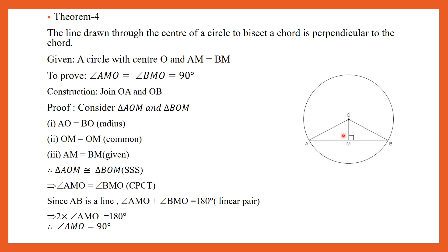Consider triangles AOM and BOM. We have AO is equal to BO, the radius of the circle. OM is equal to OM, common side. It is already given that AM is equal to BM. Therefore, triangle AOM is congruent to triangle BOM using SSS criteria. Therefore, angle AMO is equal to angle BMO using CPCT. Since AB is a straight line, angle AMO plus angle BMO equals 180 degrees using linear pair. Since both angles are equal, 2 times angle AMO equals 180 degrees, which implies angle AMO equals 90 degrees. Therefore, the line drawn is perpendicular to the chord.